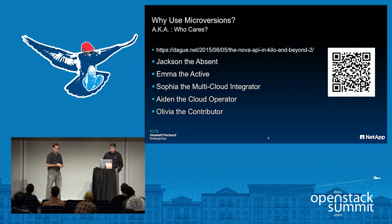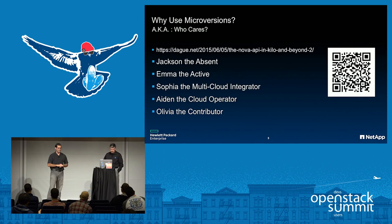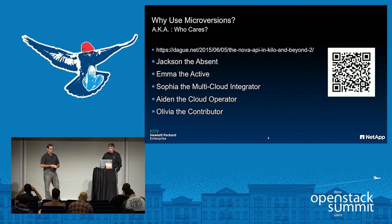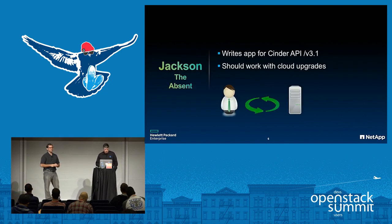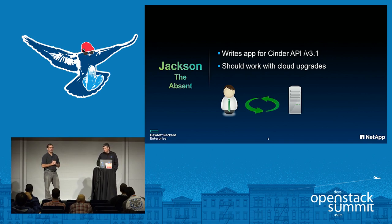So why use microversions? Sean Degg, when they rolled this out in Nova, put out a blog post that described several actors and why they would care about microversions: Jackson, Emma, Sophia, Aiden, and Olivia. Hopefully these actors will represent some or most of you here. So Jackson, the absent, is the developer who writes an app and disappears. The app lives on in production, and it needs to continue to work as we bump the API versions — we can't break those existing apps.